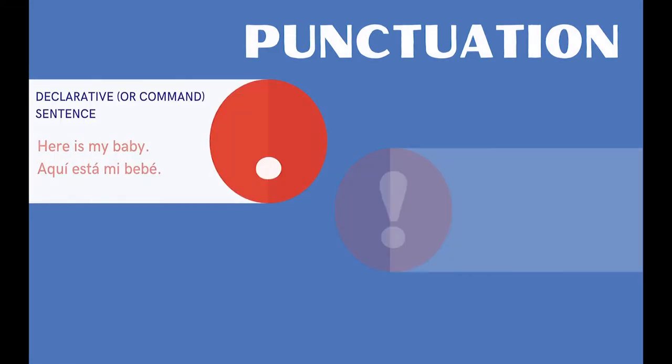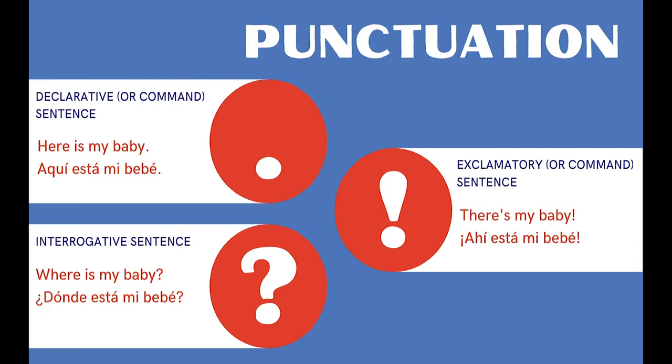Why? It's because in the Spanish language, punctuation like a question mark and an exclamation mark are going to be upside down at the beginning of a sentence, and then they're going to be right side up — like they are in English — at the end of the sentence.